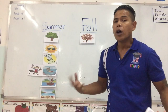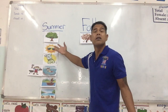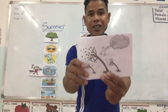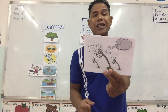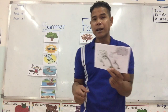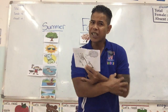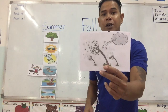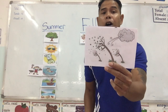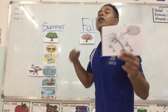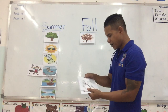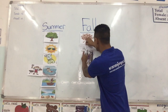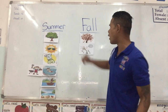In the summertime it is sunny — nice and warm. But in the fall, it is windy. There's a lot of wind. When it's windy, it's a little bit chilly — a little bit cold. It's not hot anymore. It happens in the fall when it is windy. There's a lot of wind, and the wind blows the leaves from the trees.